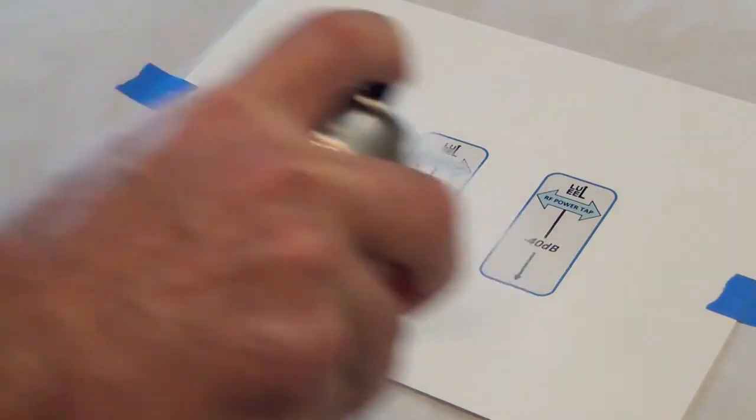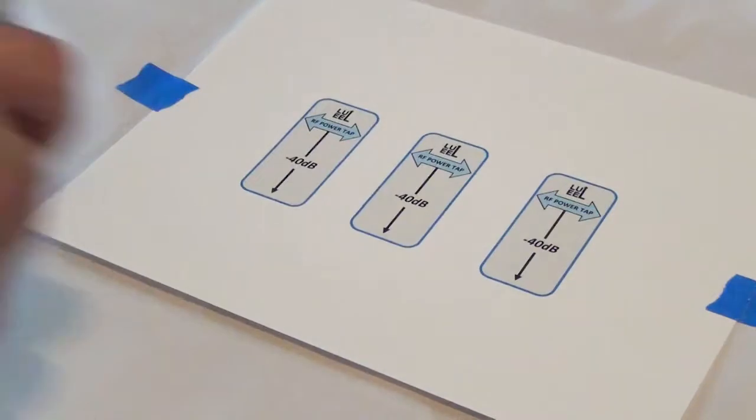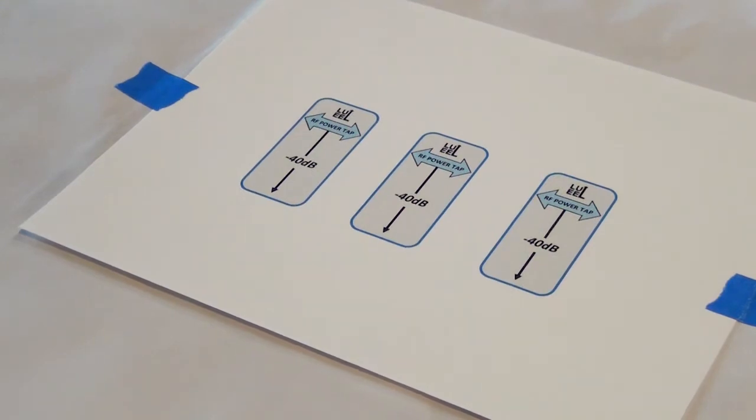Now, it's critical that you seal the ink before you submerge the decals in water, otherwise the ink will just wash away. I'm using a clear acrylic spray paint to do the job. Three light coats with about five minutes dry time between will do the trick.